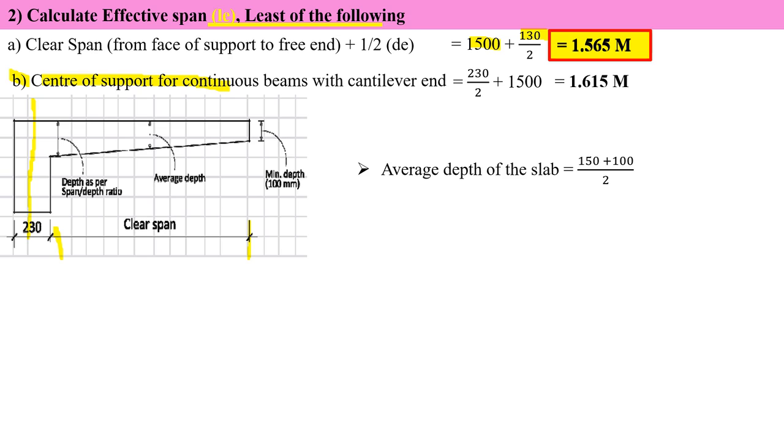Now before going for load calculation, we should take the average depth of the slab because it is a tapering cantilever slab. Minimum depth is 100 mm and maximum is 150 mm. Averaging gives 125 mm.